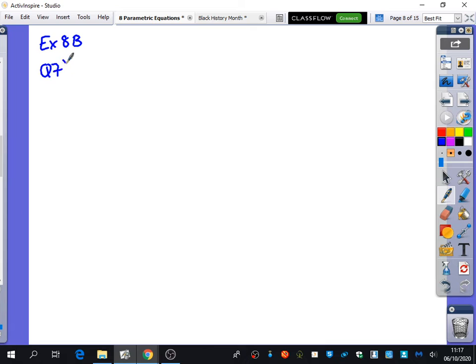I think question 7 was going to be a good one to have a look at. I think a few people probably would have found this one quite challenging. So it says that a curve has parametric equations, x equals 3 cot squared 2t and y equals 3 sine squared 2t.